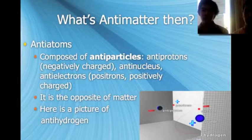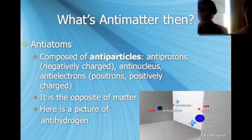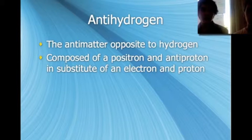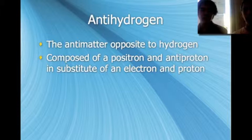Antihydrogen is the antimatter opposite to hydrogen. It is made of a positron and an antiproton, in substitute of an electron and proton. So, simply put, it is the opposite of hydrogen.